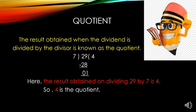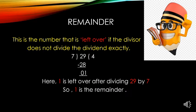Now let us understand what is quotient. The result obtained when the dividend is divided by the divisor is known as the quotient. Here, the result of dividing 29 by 7 is 4, so 4 is the quotient. The remainder is the number left over if the divisor does not divide the dividend exactly. Here, 1 is left over after dividing 29 by 7, so 1 is the remainder.